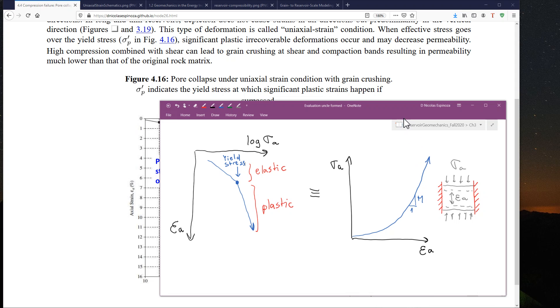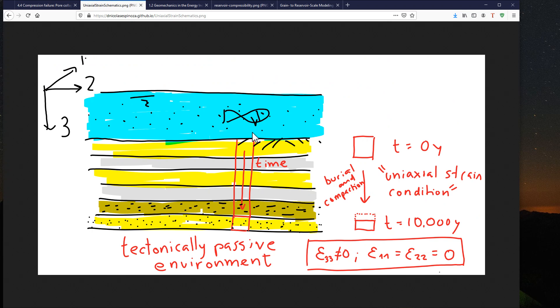So why do we care about this type of compaction? Basically, this can occur either on geological conditions, for example, with the compaction of sediments over time. We have already seen that compaction over time in a tectonically passive environment results in these so-called uniaxial strain conditions and compaction just in vertical direction with loss of porosity.